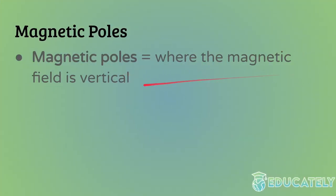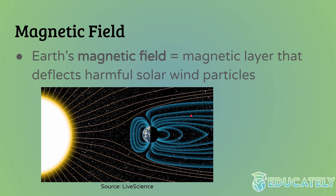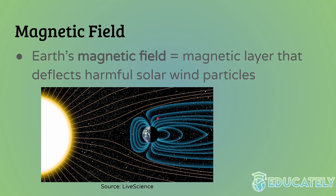The magnetic poles are where the magnetic field is perpendicular to the Earth's surface — where it's digging into Earth in both hemispheres. Because the magnetic field isn't perfectly even or symmetrical, the magnetic poles don't actually have to be on the direct opposite sides of Earth, unlike the geomagnetic poles and the geographic poles, which do have to be on directly opposite sides of the planet.